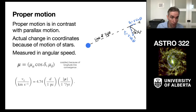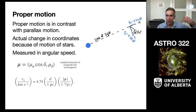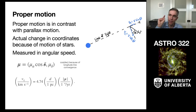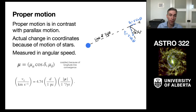Gaia also measures proper motions by tracking coordinates of objects over time, measuring the tangential velocities of stars on the celestial sphere — the component of motion perpendicular to our line of sight. Gaia reports proper motion in the right ascension direction with the cosine declination term already applied, so these are equal-size displacements in the tangent plane to the celestial sphere at the star's location. The tangential velocity can then be calculated as 4.74 times the distance in parsecs times the proper motion in arc seconds per year, giving an answer in kilometers per second.